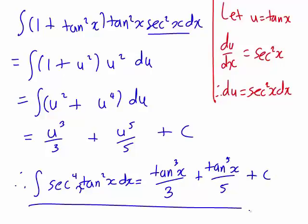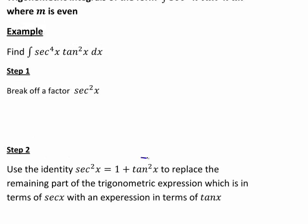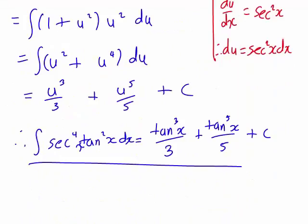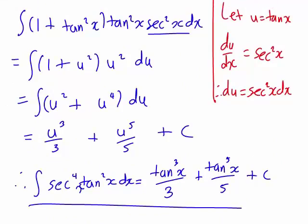The main thing to remember here is to break off the factor of sec squared x, write everything else in terms of tan x using this very useful identity sec squared x equals 1 plus tan squared x, and then use integration by substitution to get the final result.